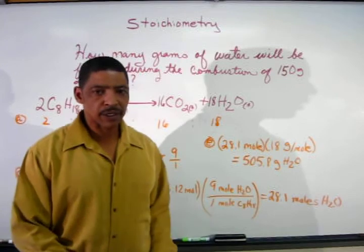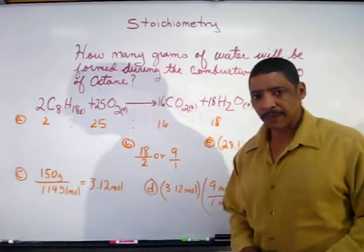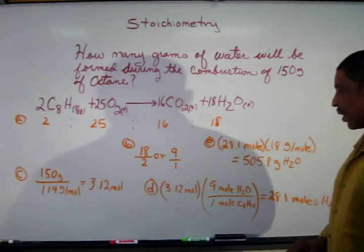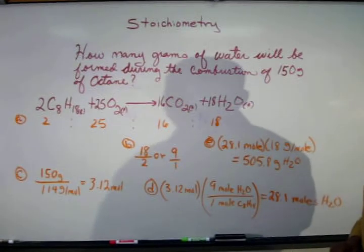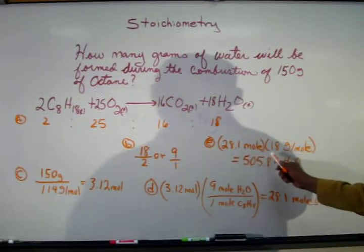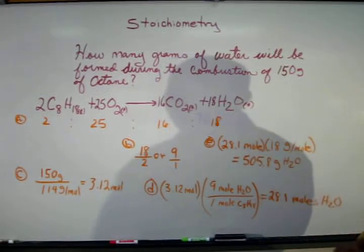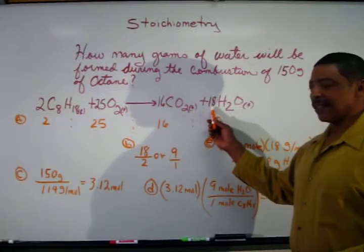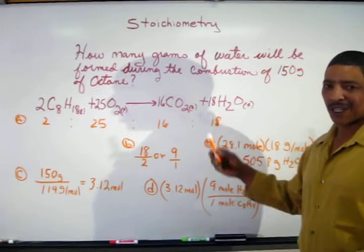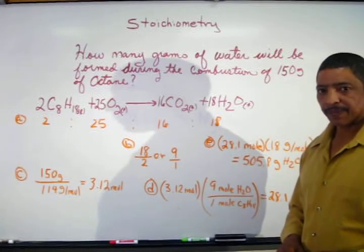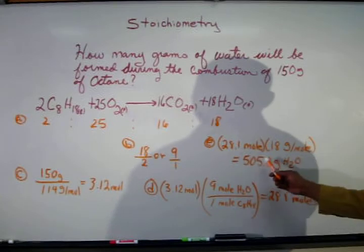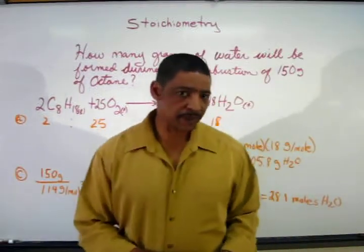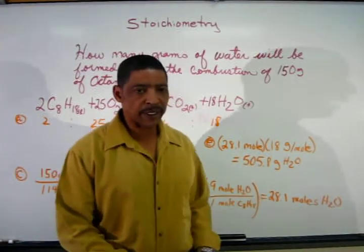After determining the moles of water, finding the mass of water is quite simple. Using the mole calculation and solving for mass: mass equals 28.1 moles times 18 grams per mole, which is the molar mass of water. Remember, do not use the 18 in front of water in the balanced equation — that number has already been used in the fraction. 28.1 moles times 18 grams per mole gives a final answer of 505.8 grams of water.